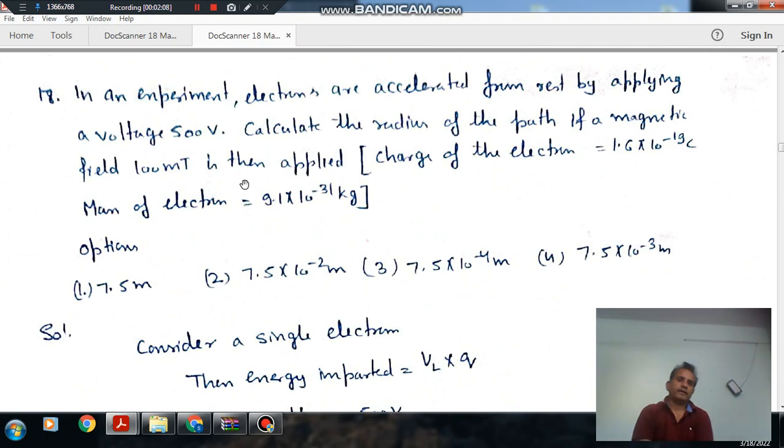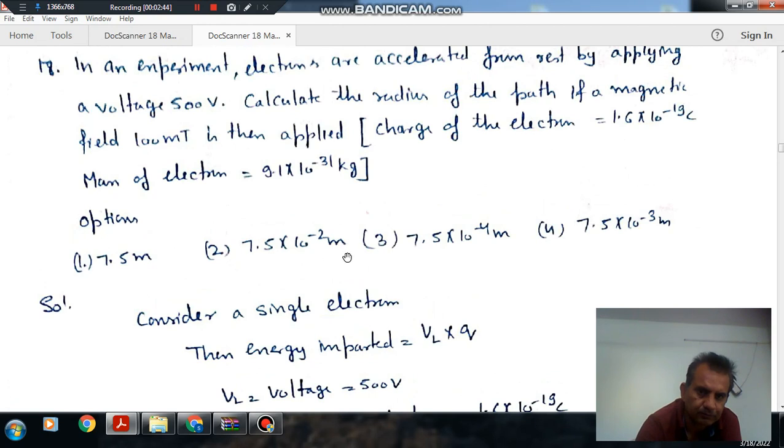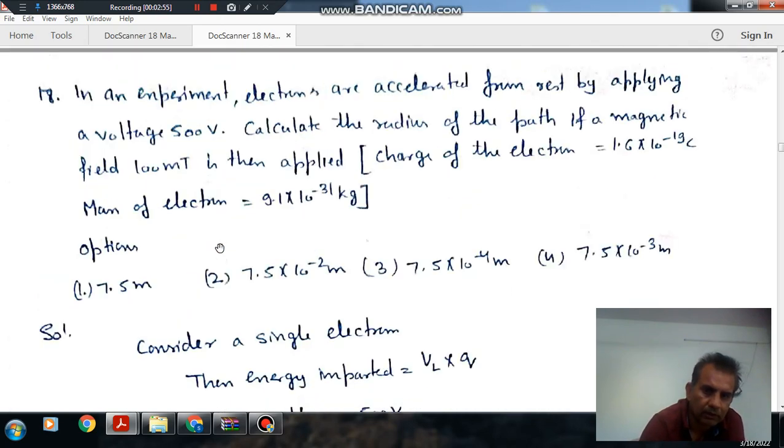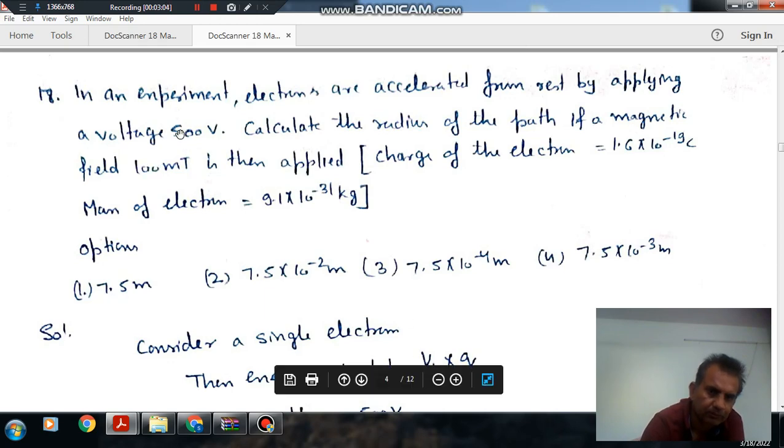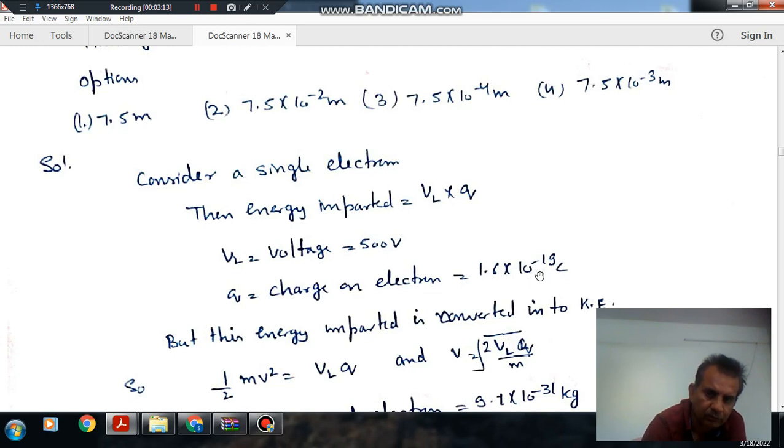Next, in an experiment, electrons are accelerated from rest by applying a voltage of 500 volts. Calculate the radius of the path if a magnetic field of B milliTesla is then applied. Charge on the electron is 1.6×10^-19 coulomb and mass of the electron is 9.1×10^-31 kg.